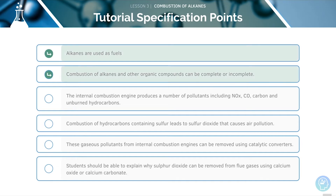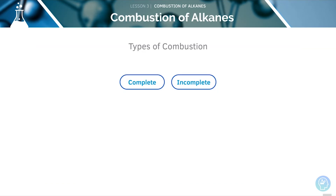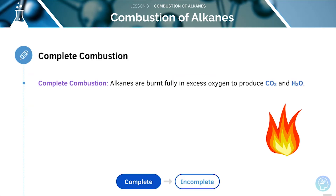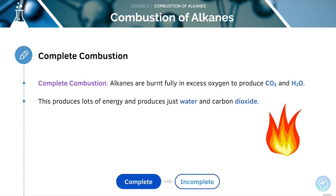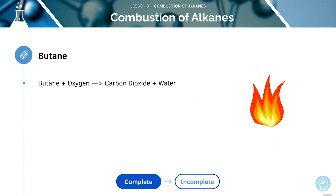We'll start by looking at the uses of alkanes and their combustion. We'll be looking at two types of combustion today: complete and incomplete. During complete combustion, alkanes are burnt fully in excess oxygen. This produces carbon dioxide and water, and lots of energy. Let's look at the complete combustion of butane — when it's burnt in oxygen, we get carbon dioxide and water. This is the chemical formula equation.